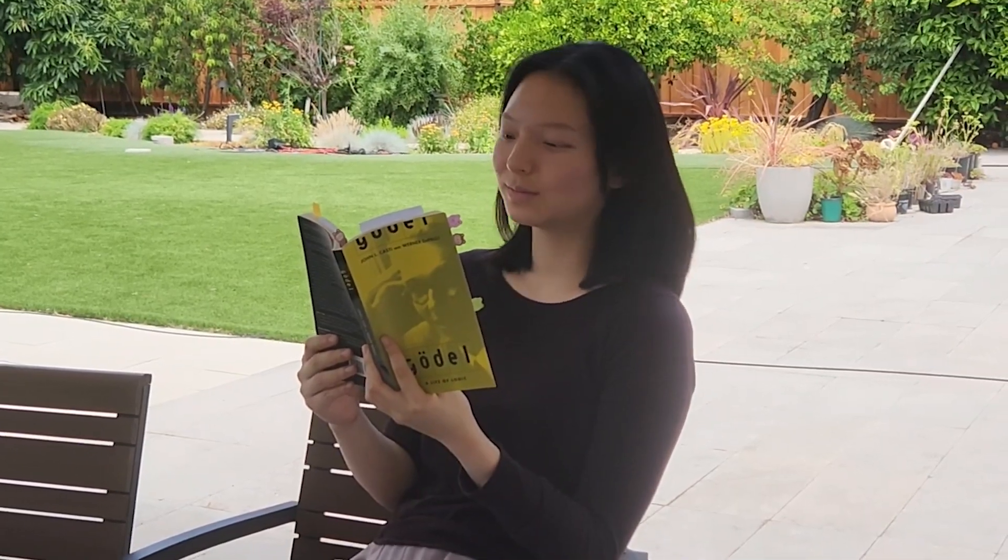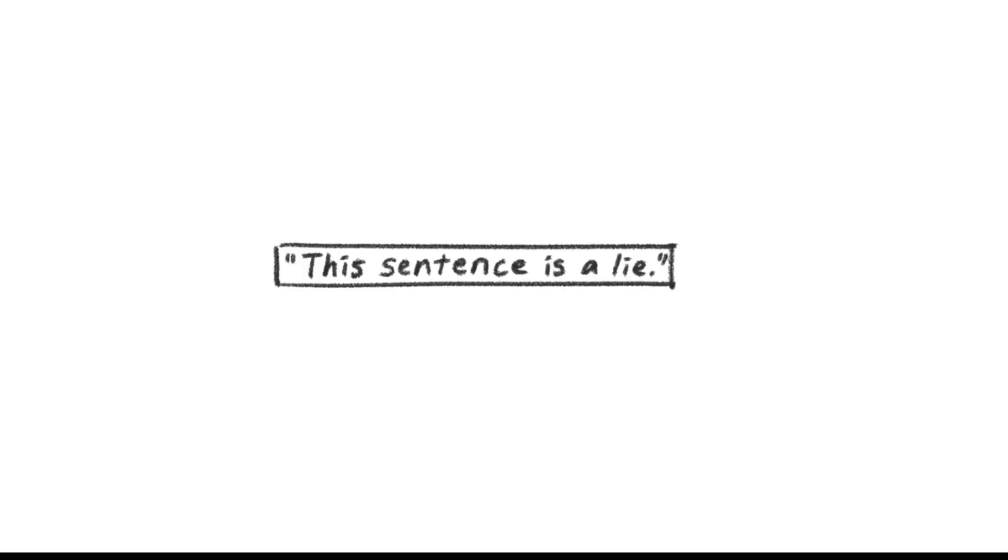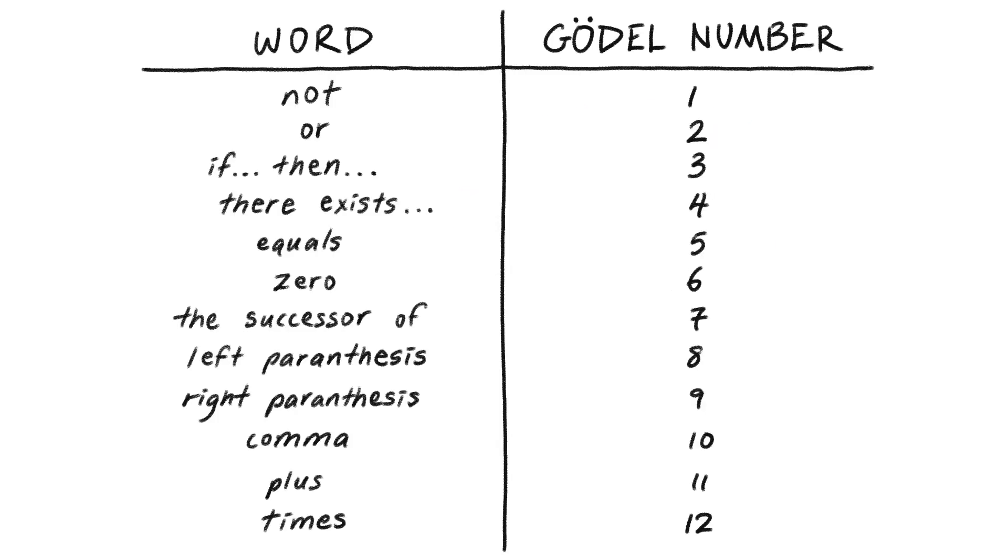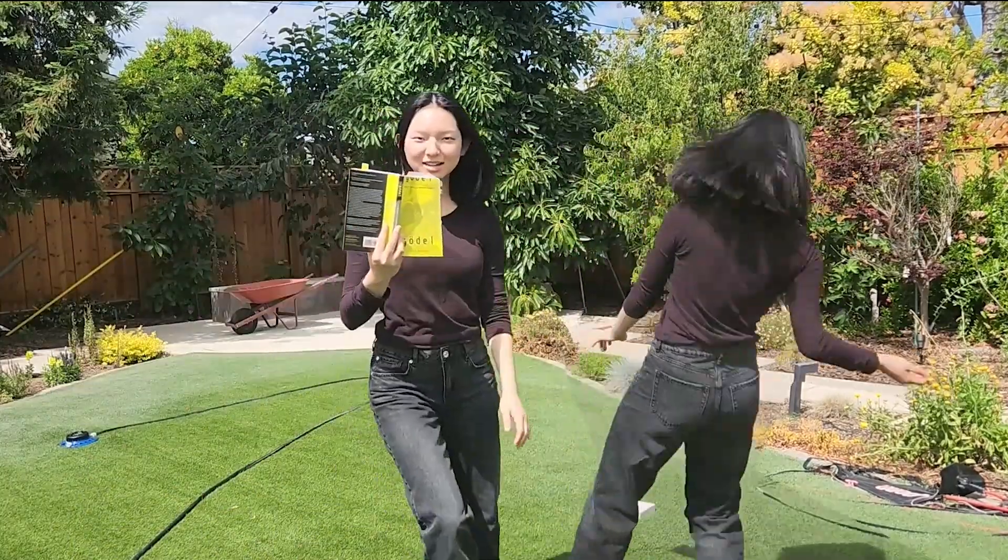So, how did he do this? Let's look back at our paradox. The key is that the sentence refers to itself. So that's exactly what Gödel did with math, by translating sentences into numbers. Huh? Okay, here's an example.